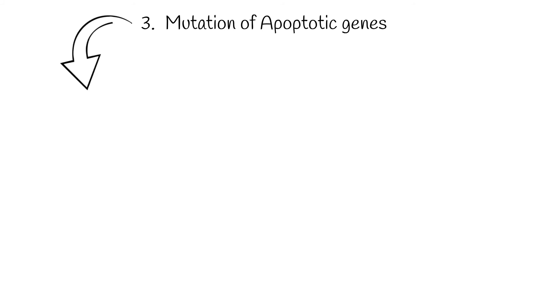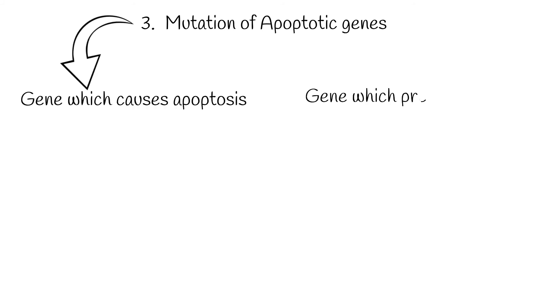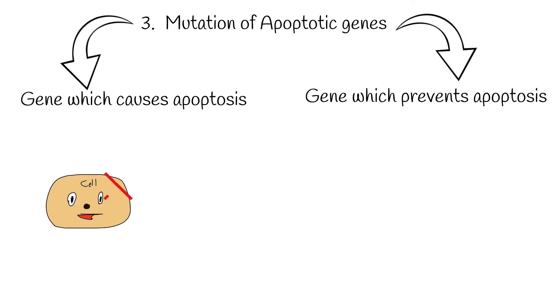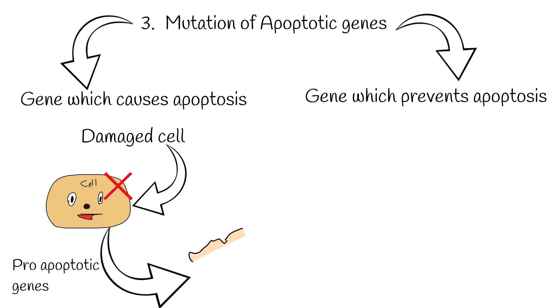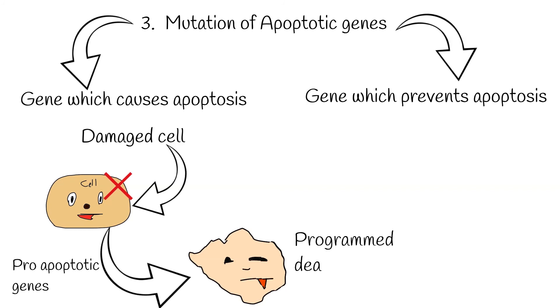Three: mutation of the genes which regulate apoptosis can cause cancer. Moreover, mutation of the gene which prevents apoptosis can also cause cancer. Normally, if a cell's DNA is damaged and it has a risk of developing cancer, the cell kills itself to save the organism from potential cancer development. Such action is called apoptosis and is regulated by apoptotic genes.